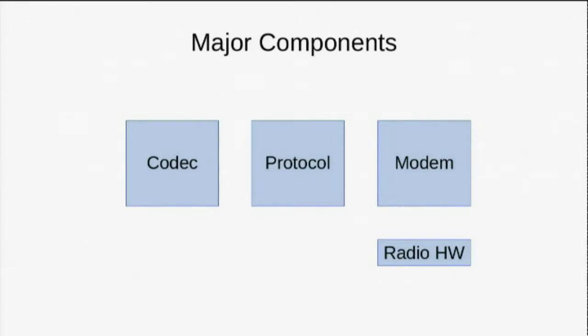Some of the major components: the codec takes speech from the microphone and compresses it down to a low bitrate — that's key to getting spectral efficiency. Then there's the protocol that wraps up the codec bits in an appropriate form for the channel. Then the modem takes the ones and noughts and works out the best way to send them over the RF channel, converting it into an analogue signal. There's also the radio hardware. I've intentionally drawn that as a small box because the hardware is becoming a smaller and smaller part of the whole system — it's all becoming software.